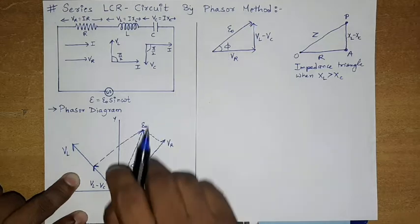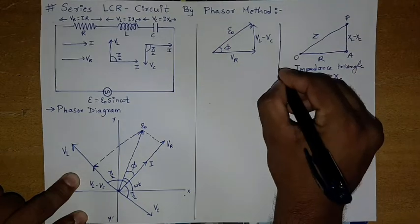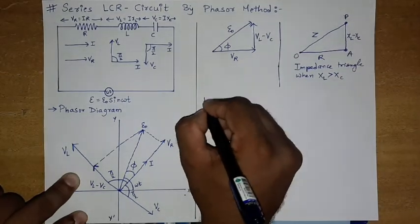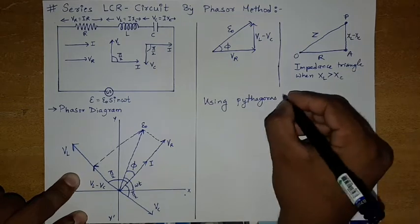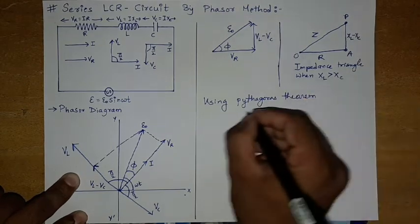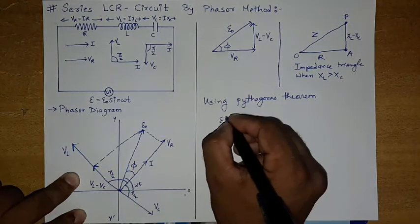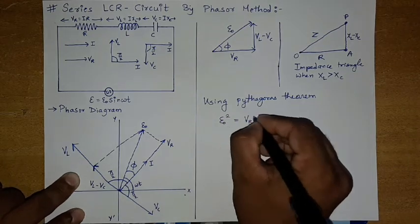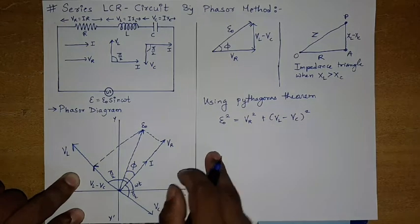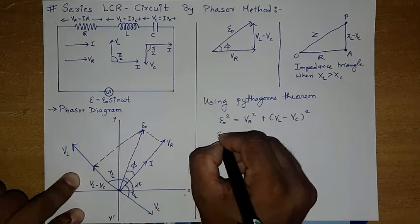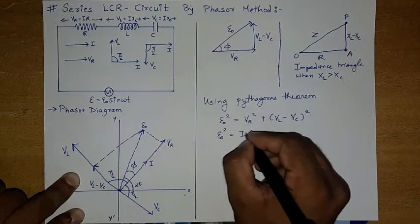Applying Pythagoras theorem to this triangle: epsilon_not² = VR² + (VL − VC)². Substituting VR = I_not·R, this gives epsilon_not² = (I_not·R)² + (I_not·XL − I_not·XC)².